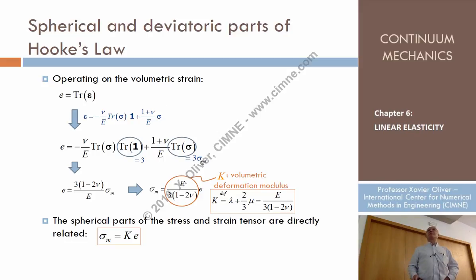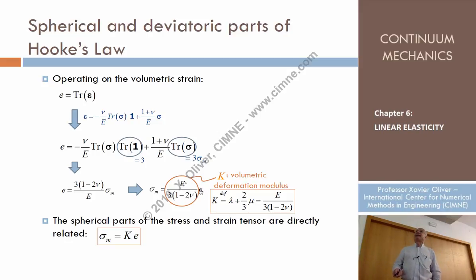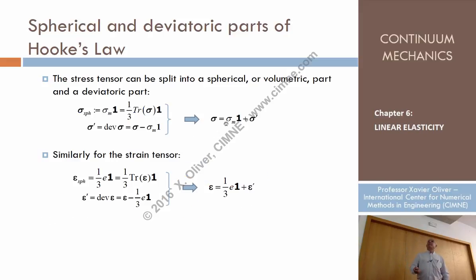By definition, the trace is 3 times the mean stress. So we can replace and obtain that this equals 3 times the mean stress. Solving for the mean stress, we obtain that the mean stress equals a coefficient — expressed in terms of Young's modulus E and Poisson's ratio ν — times the volumetric strain. So the spherical part of the stress tensor depends only on the volumetric strain through one coefficient.